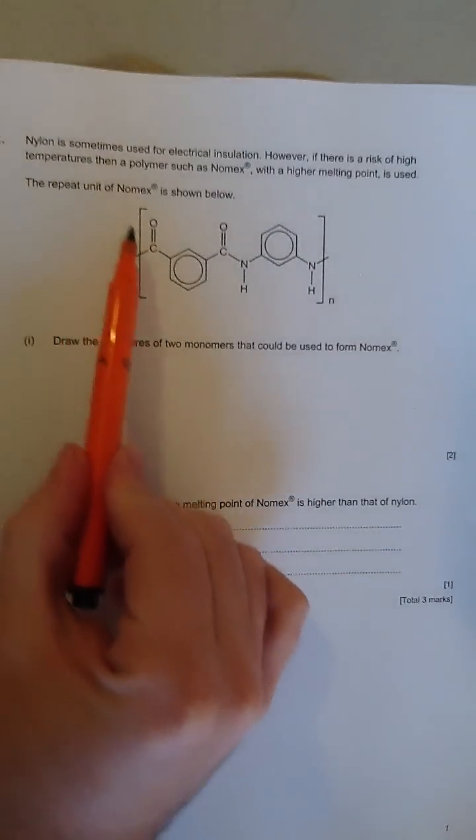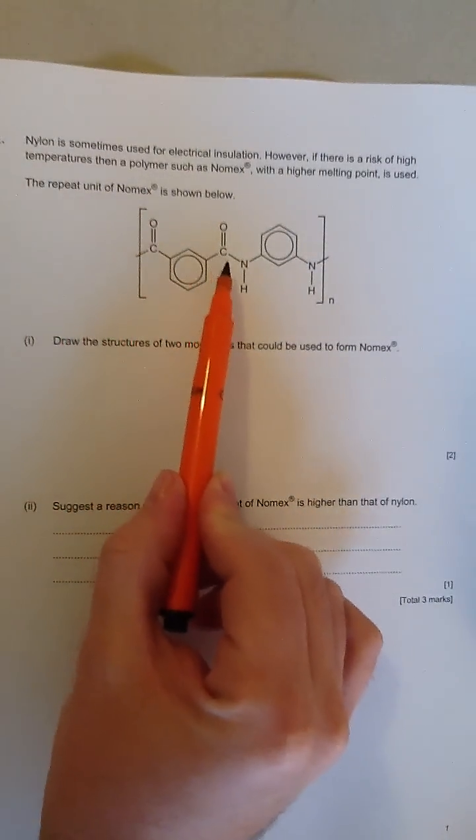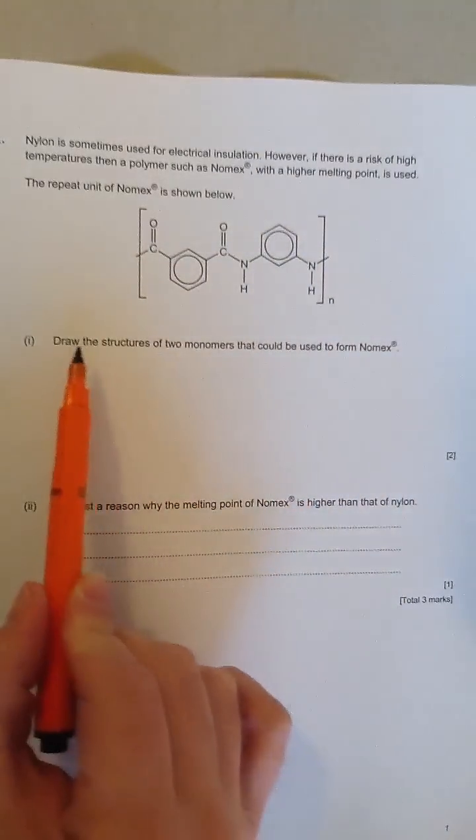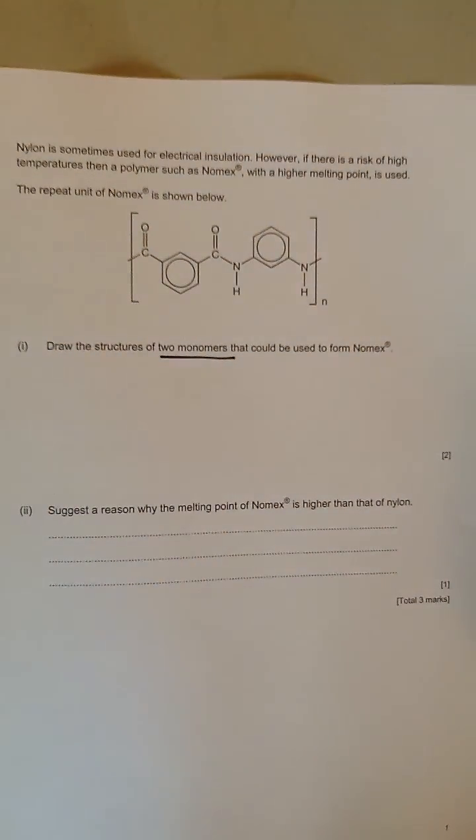It says the repeat unit of Nomex is shown below. It's a C double bond O, benzene ring, C double bond O, an NH, a benzene ring and an NH. And it says draw the structure of the two monomers, which is the important part, that could be used to make Nomex.